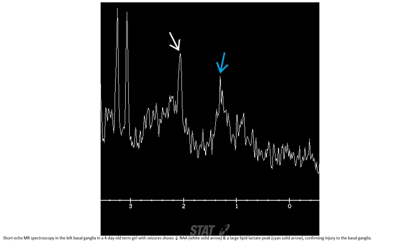Short echo MR spectroscopy in the left basal ganglia in a four-day-old term neonate shows decreased NAA and a large lipid lactate peak, confirming injury to the basal ganglia.